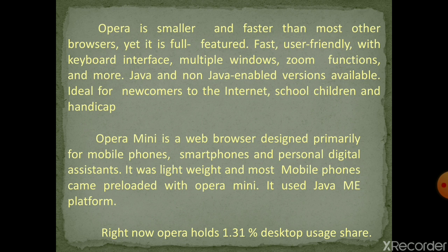Opera is ideal for newcomers to the internet, school children, and even handicapped people. Opera Mini is a web browser designed primarily for mobile phones, smartphones, and personal digital assistants — it was lightweight and most mobile phones came preloaded with Opera Mini. It was developed on the Java ME platform. Currently, Opera holds approximately 1.31% of desktop usage share compared with other browsers.